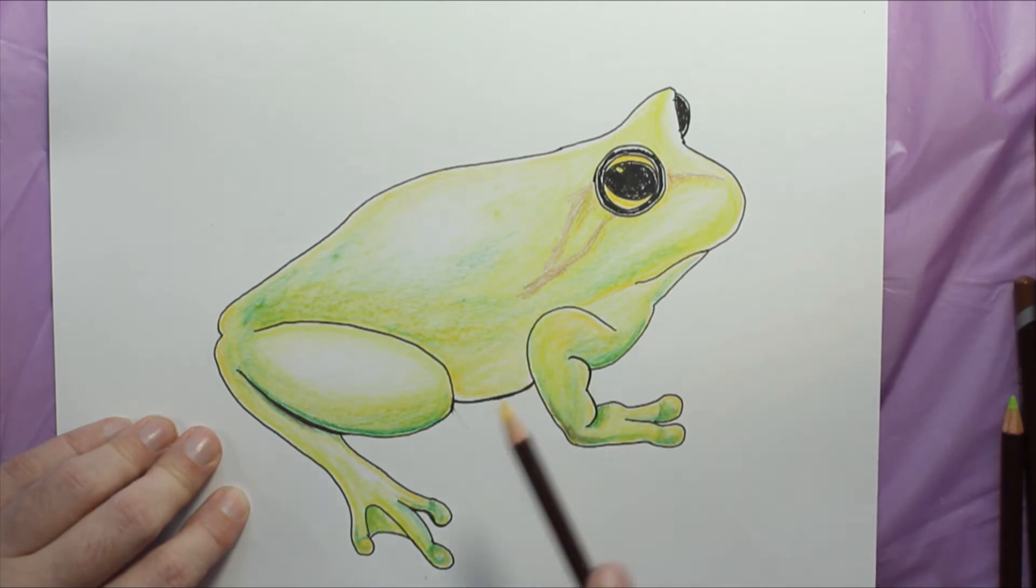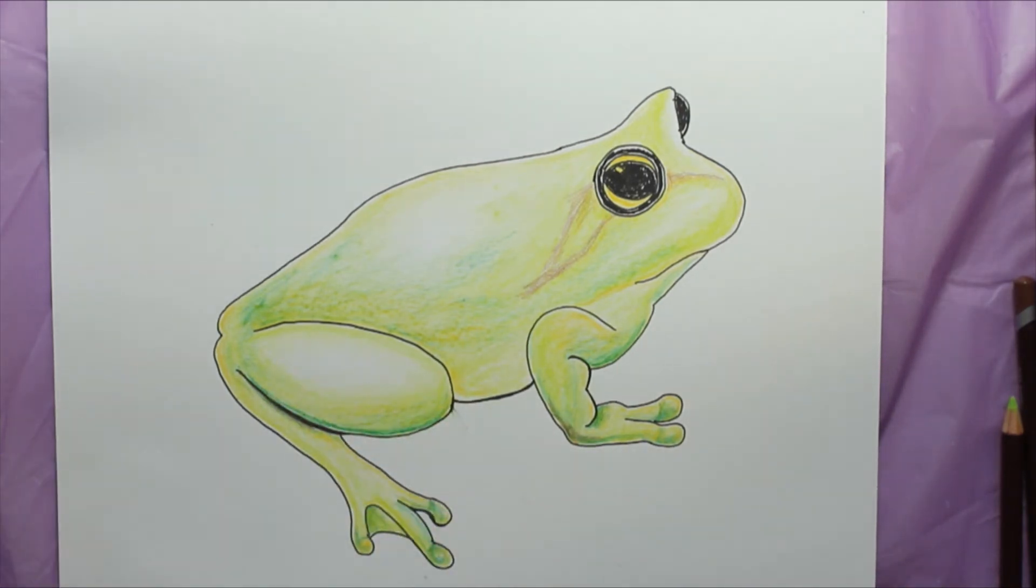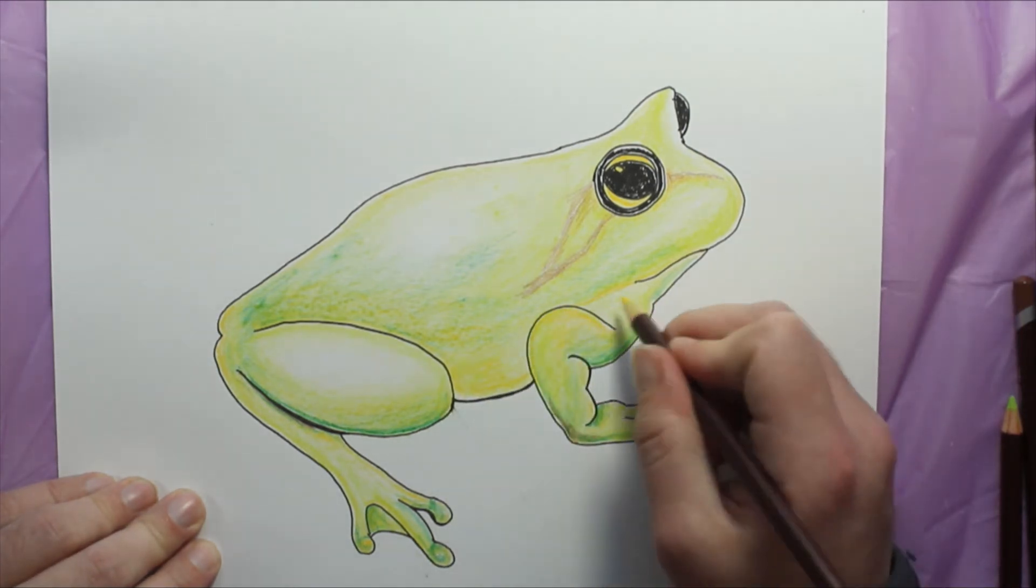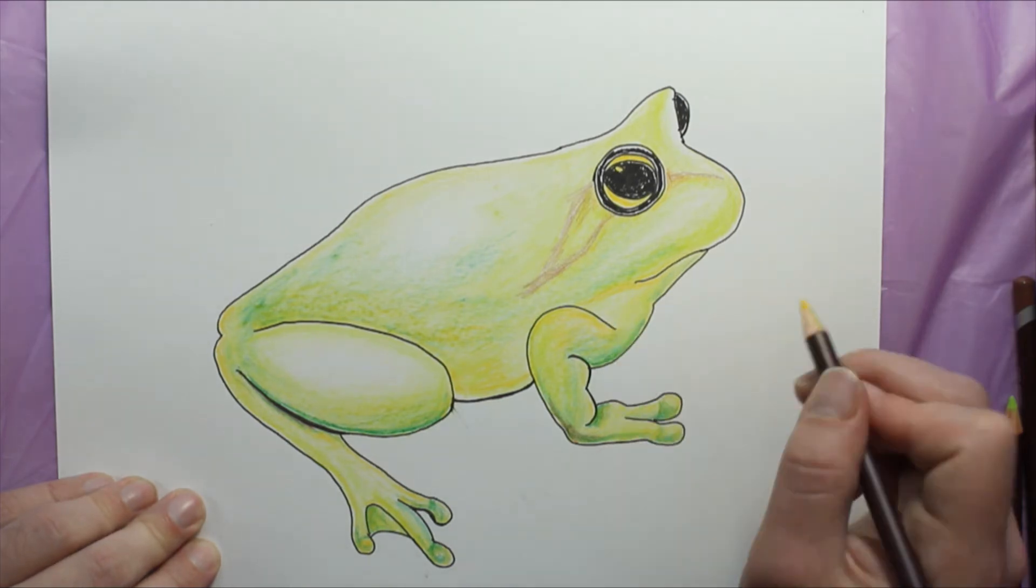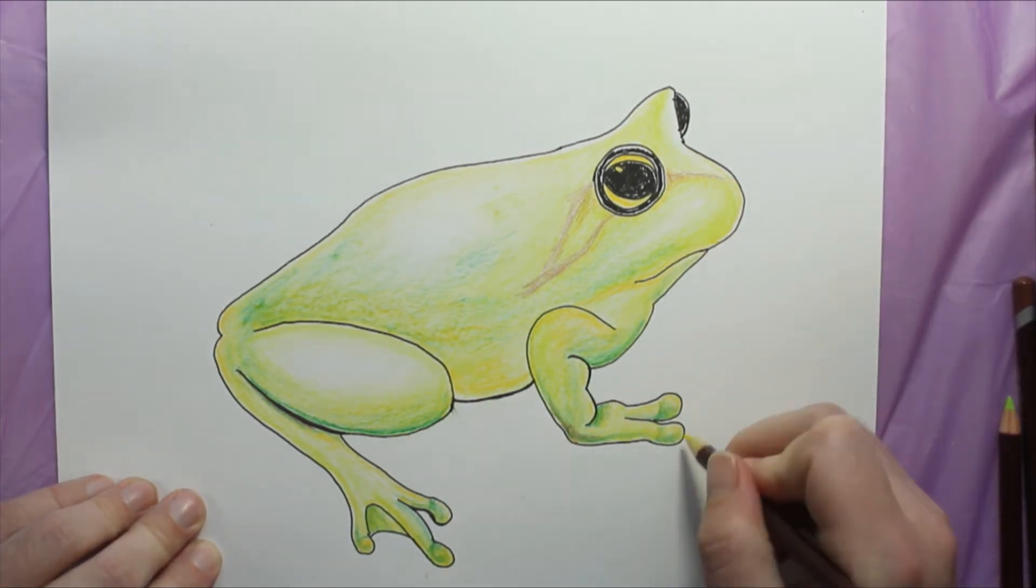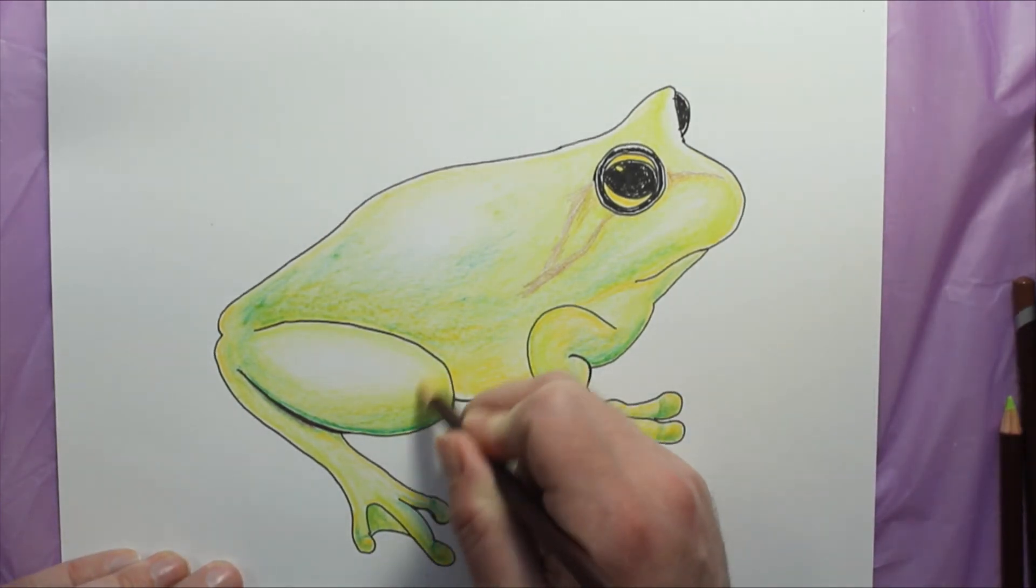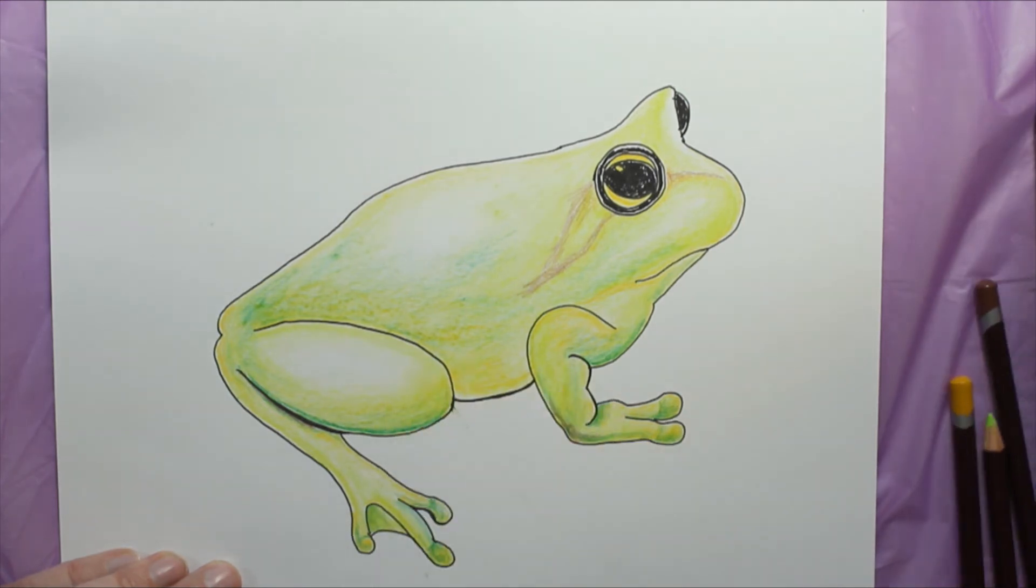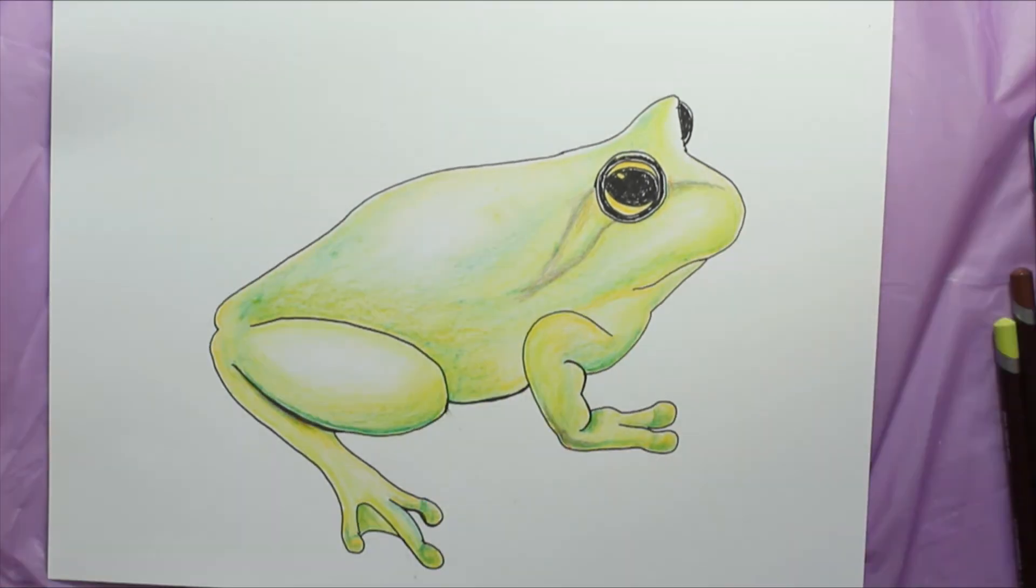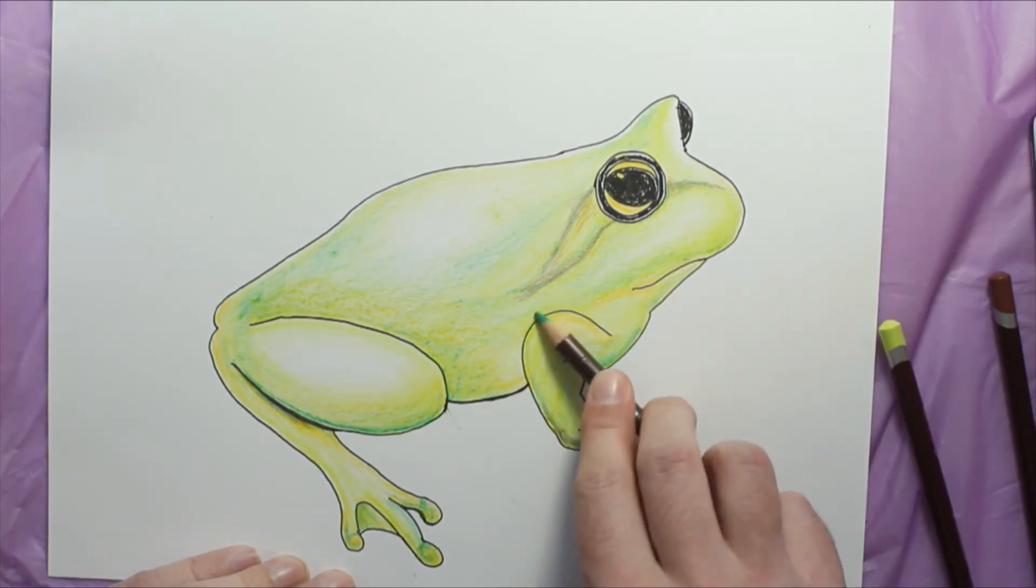And actually one of the ways that you can tell if it's a male frog or a female frog is by looking at the ears. Males have larger ears. It's kind of behind their eye, and if it's a larger ear, if it's more prominent, then it's most likely a male frog.